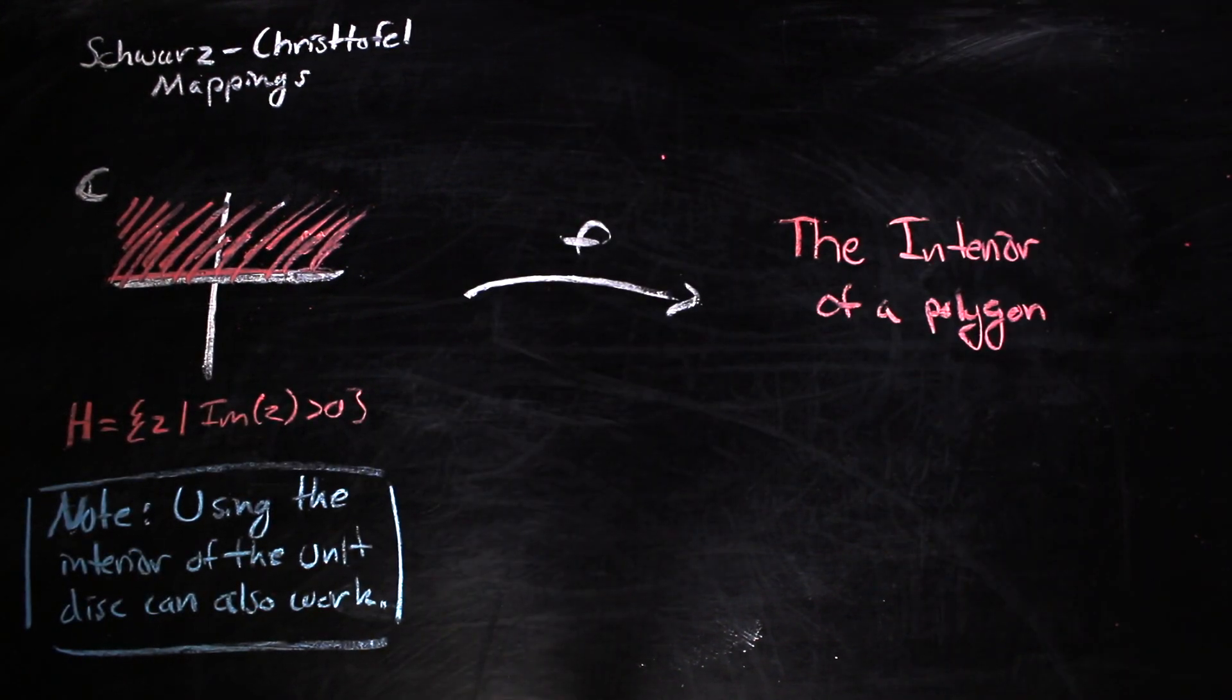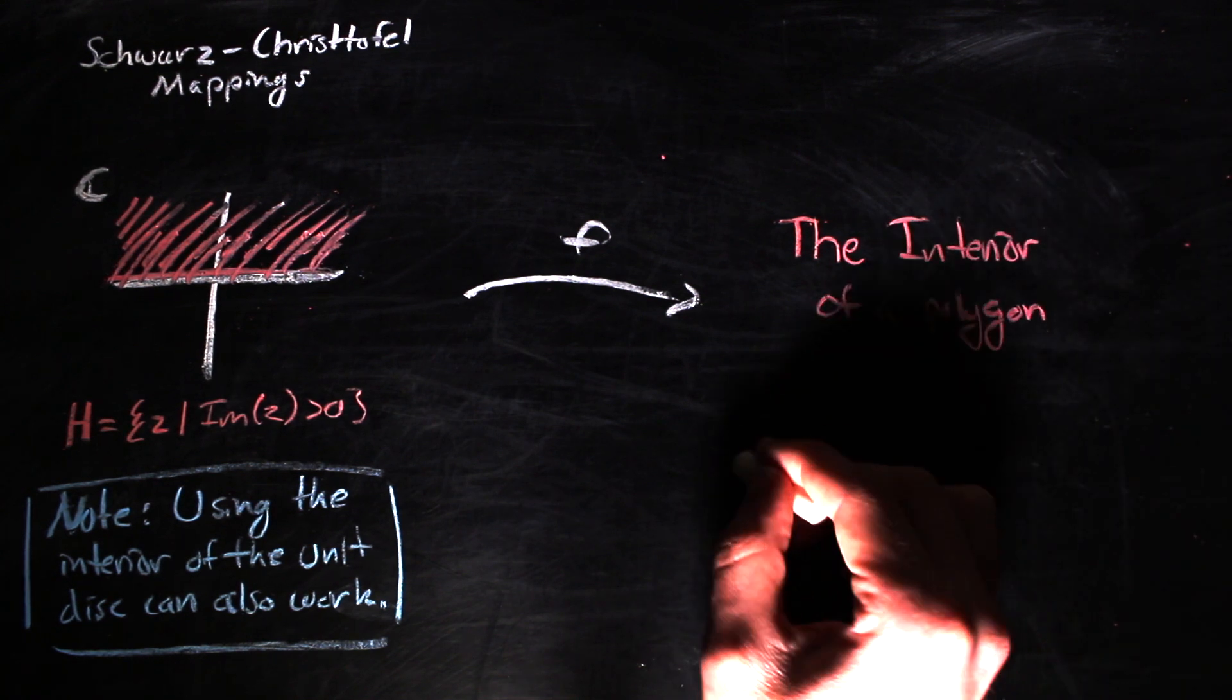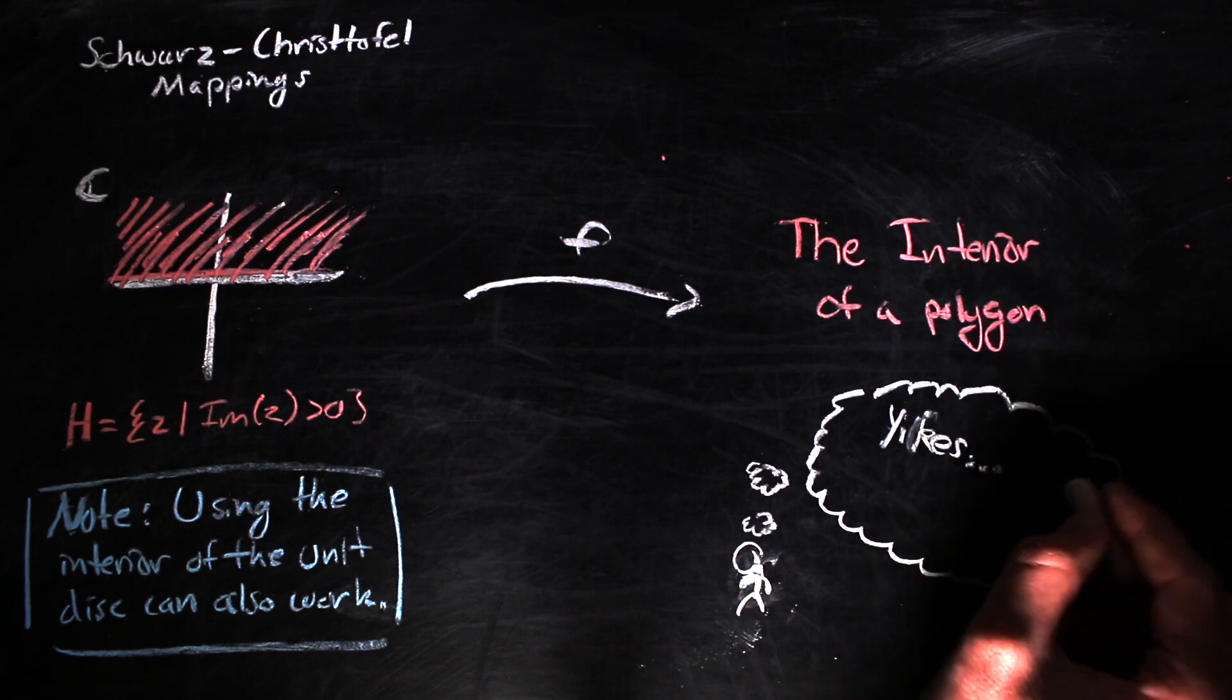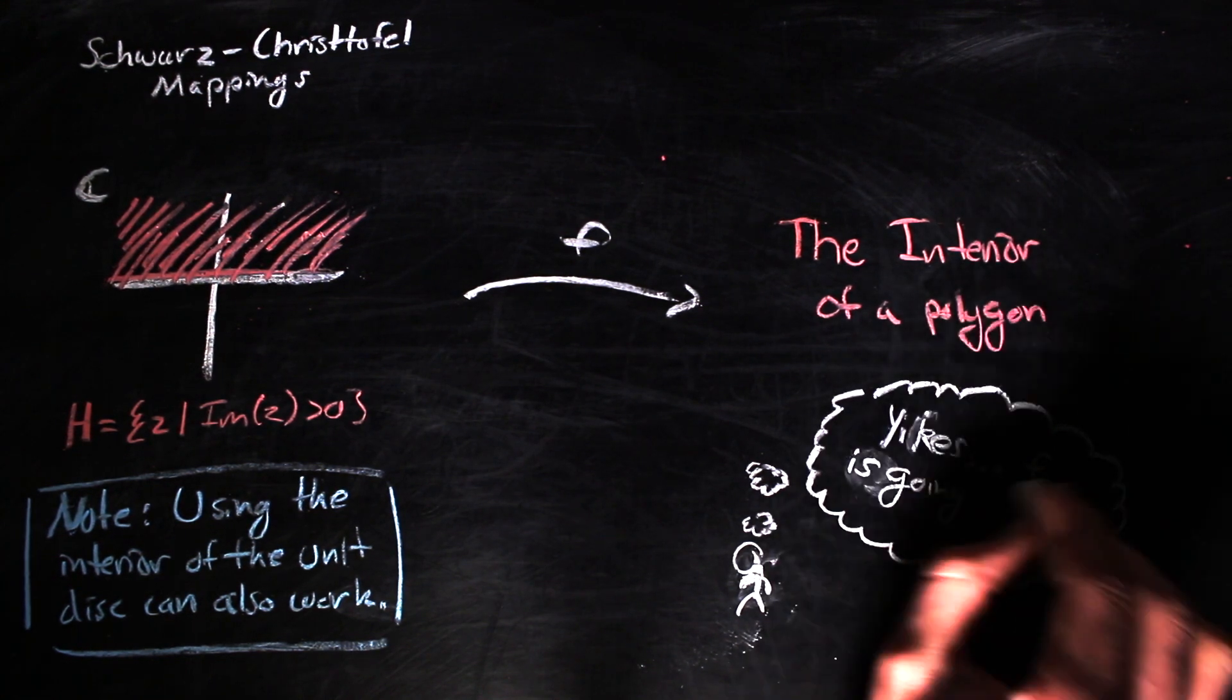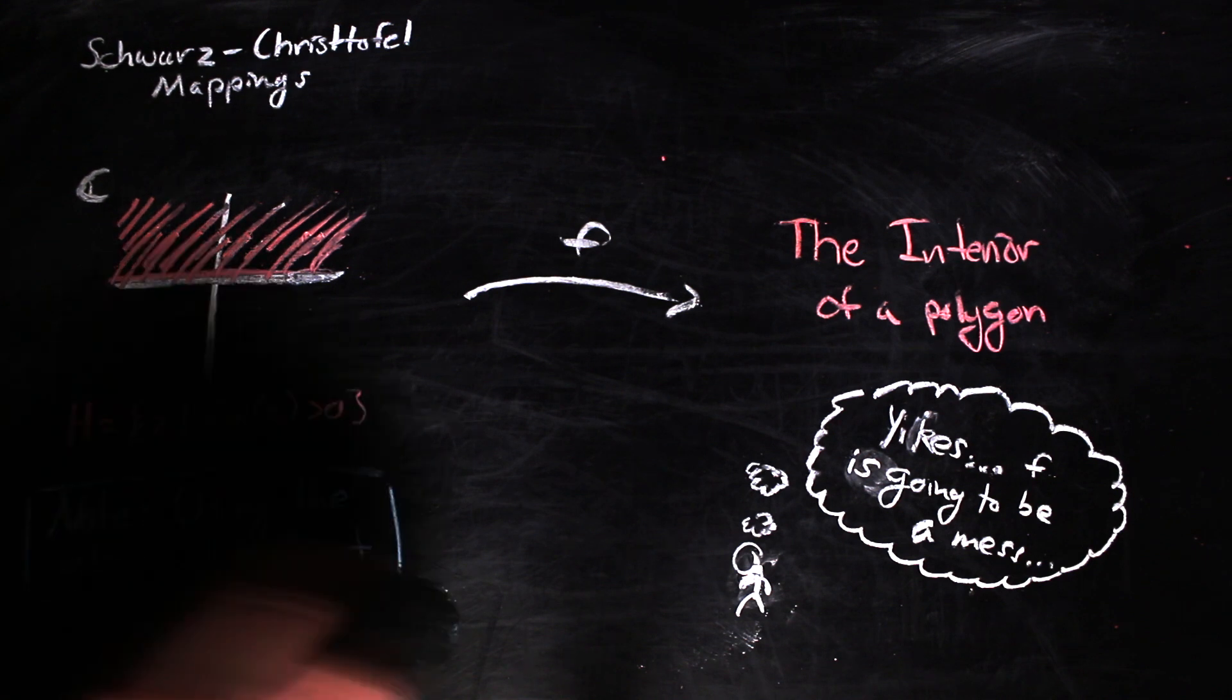The math here gets incredibly hairy, incredibly fast. And that seems reasonable. The mapping is conformal after all, so it needs to encode all of the local geometric information from the upper half plane, which is an infinite region, into some polygon, which is a bounded region, as well as utilize the information given by that polygon, like where you want the vertices to go.